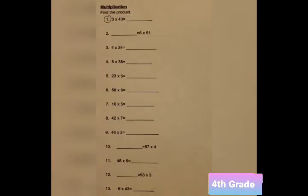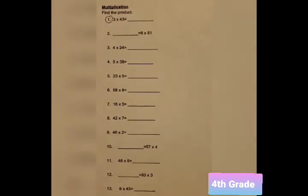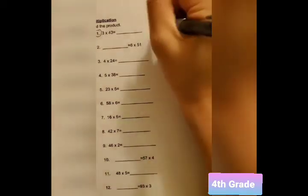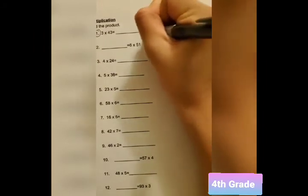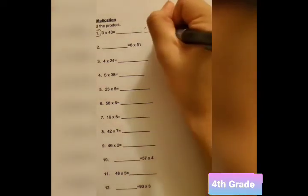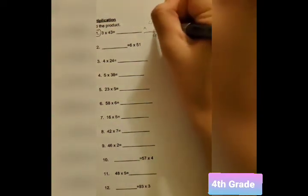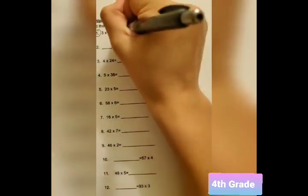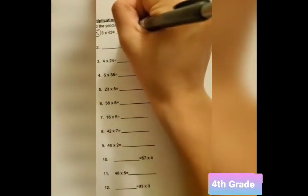Last page, we got some multiplications. And for question number 1, we have 3 times 43. For this equation, I would put it in this format, just so that it's easier to see. And when we look at it this way, 3 times 3 is 9. 3 times 4 is 12. So, we just bring that over here. And the answer will be 129.